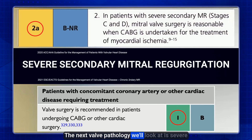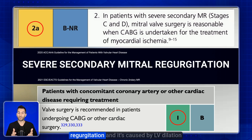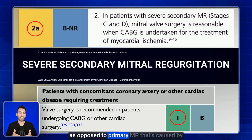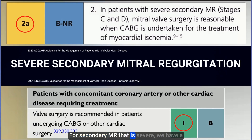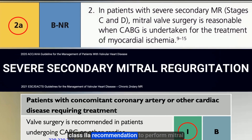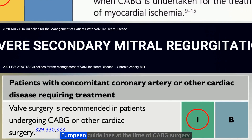The next valve pathology is severe secondary mitral regurgitation. Secondary MR is functional mitral regurgitation caused by LV dilation, as opposed to primary MR which is caused by problems with the leaflets or the mitral valve itself. For severe secondary MR, there is a Class 2A recommendation to perform mitral valve surgery at the time of CABG from the ACC/AHA, and a Class 1 recommendation from the European Guidelines.